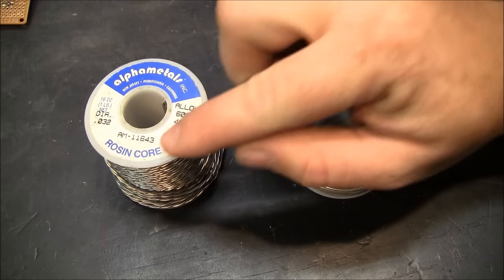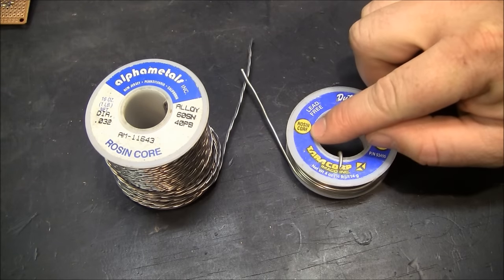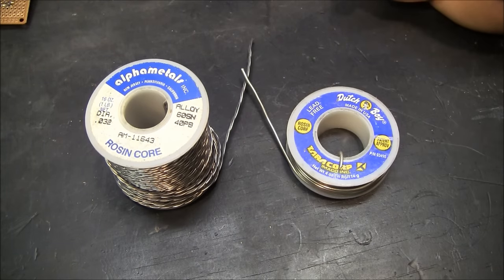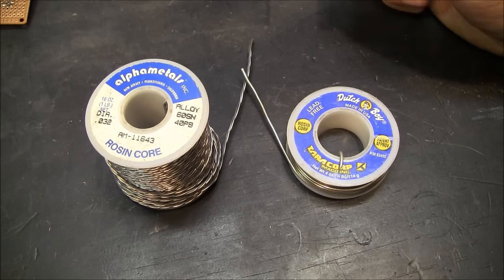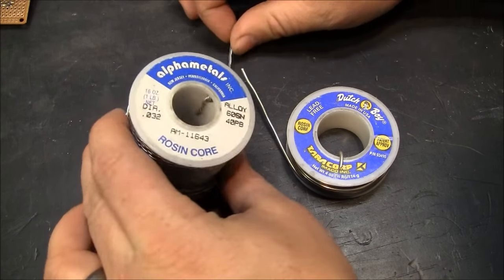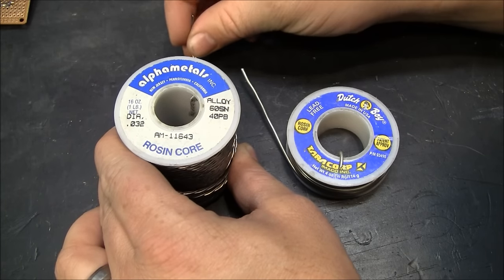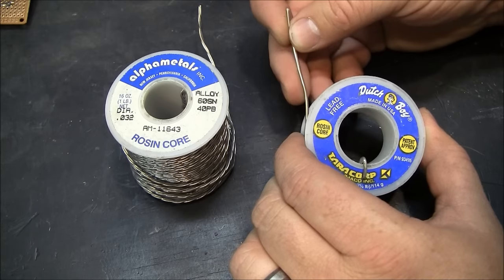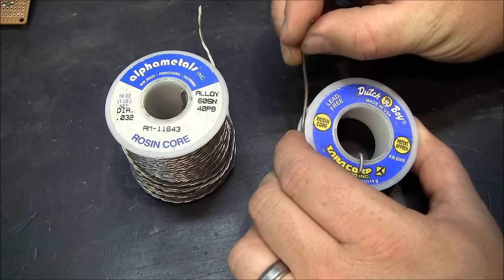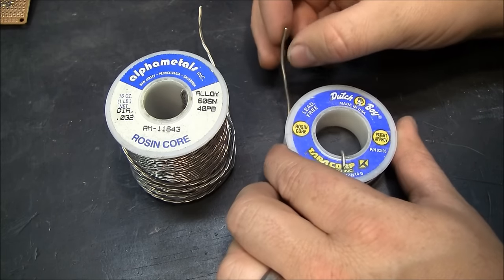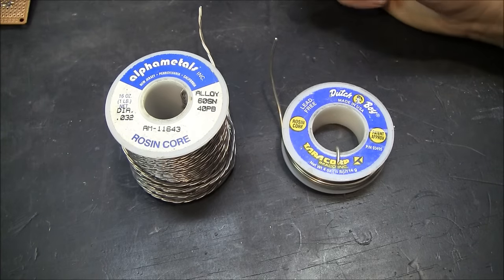For soldering electronics you definitely want rosin core solder. Acid core is not for electronics. It will mess things up. In the old days we could get some good lead solder. Lead free has a slightly higher melting point, but for all intents and purposes it's the same.